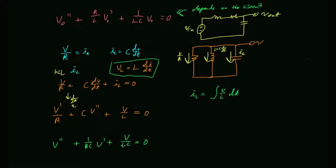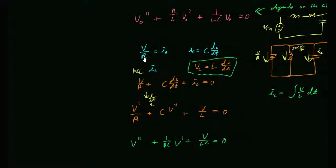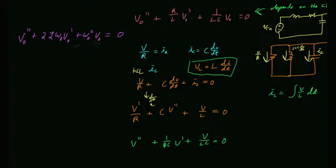They look totally different, but at the end of the day you can write both equations in the standard form: v-out'' + 2·zeta·omega_naught·v-out' + omega_naught²·v-out = 0. As long as you can solve for the natural frequency and the damping ratio, you're good to go.